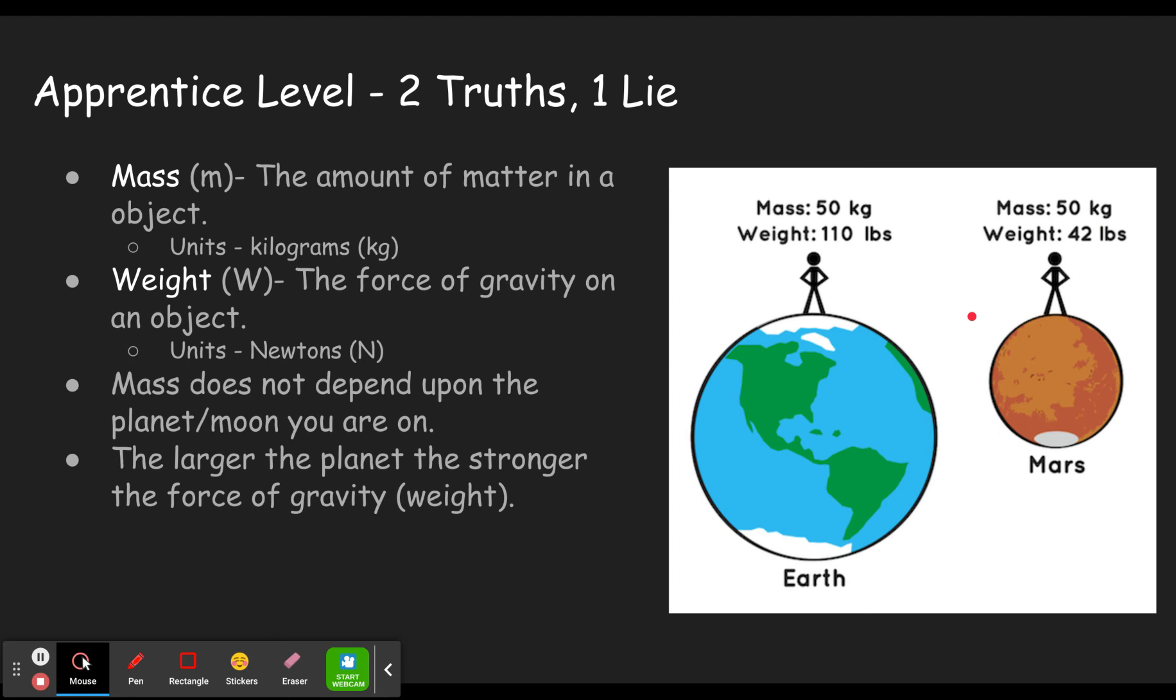The last thing you need to know is that weight can be calculated using a formula W equals m, which is mass, times g. g is the acceleration of gravity. We learned about that in the kinematics unit. The acceleration of gravity is 9.8 meters per second squared.